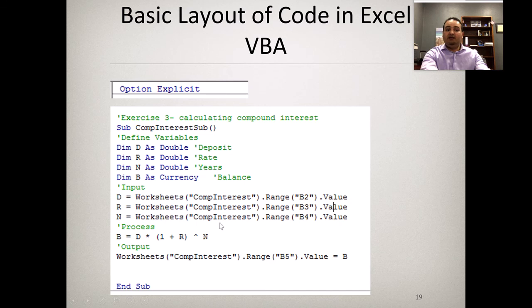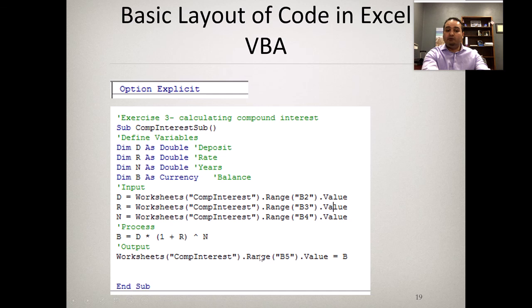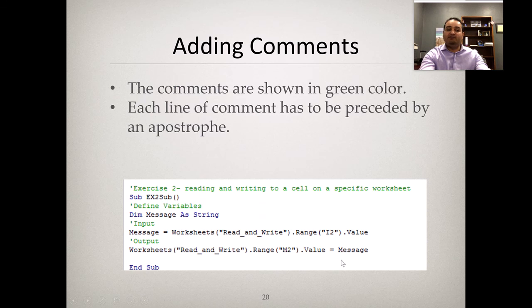In the interest calculation example, the variable 'd' (deposit) is assigned to cell B2, 'r' (rate) to B3, and number of years to B4. The process is the formula: B equals deposit times (1 plus rate) raised to the power of number of years. The output assigns the balance — declared as currency — to cell B5. Comments are important throughout the code.